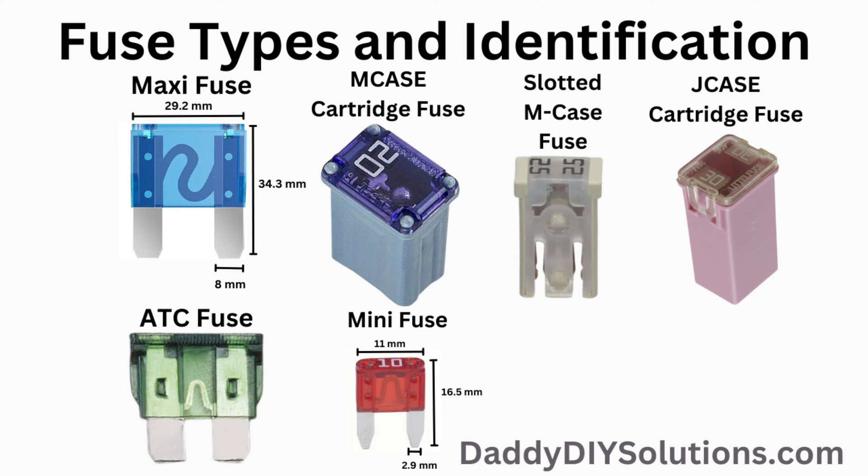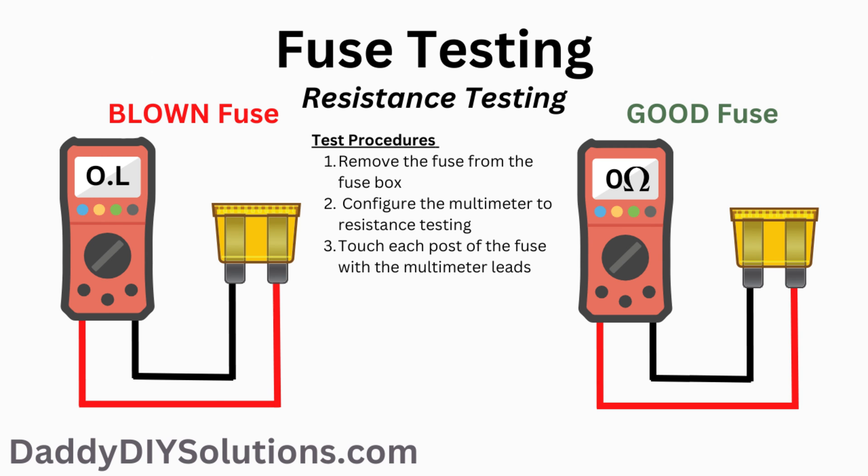Next, we'll show you how to use a multimeter to test the fuse. This is how you perform a resistance test using a digital multimeter. First, set your multimeter to resistance mode.